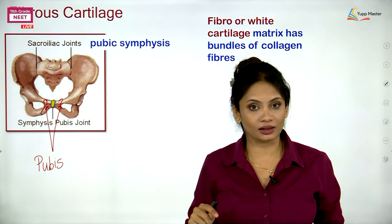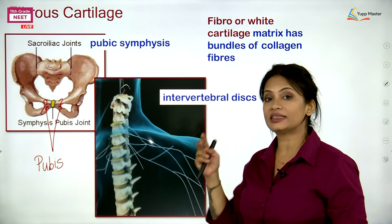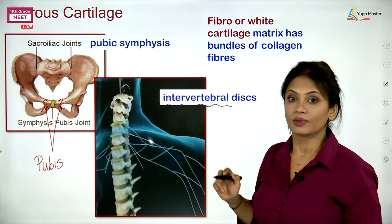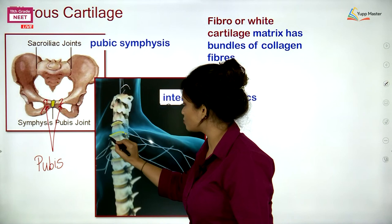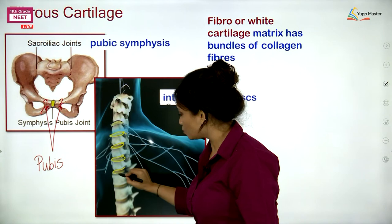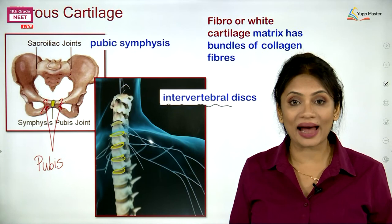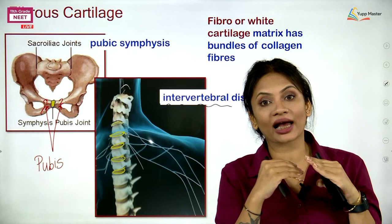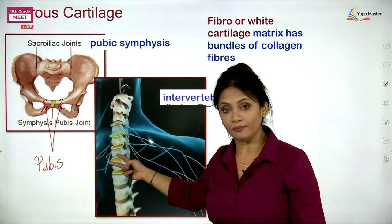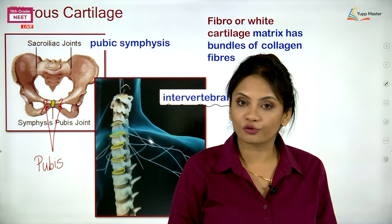Another location of fibrous cartilage is between two vertebrae — intervertebral discs. These yellow disc-like structures between the vertebrae allow you to move your back. Without them, bone on bone would create friction and pain. The cartilaginous disc between two vertebrae allows movement and flexibility.